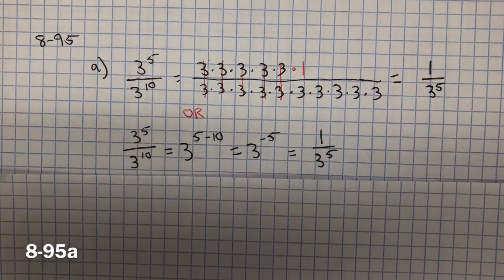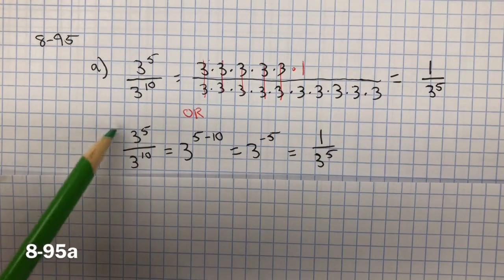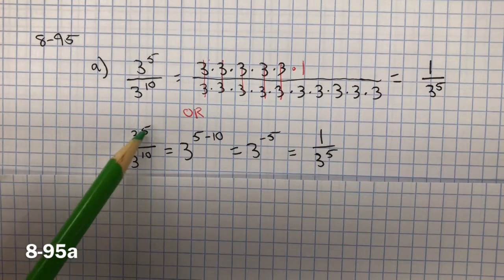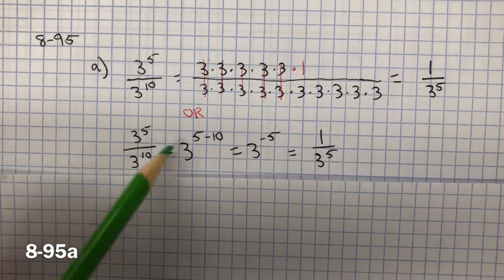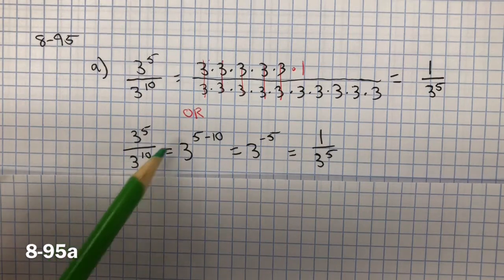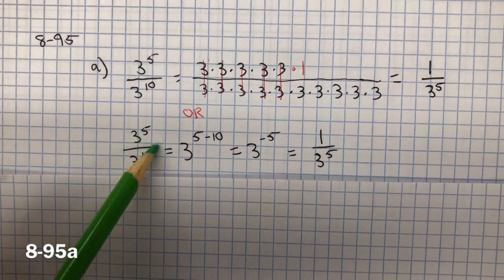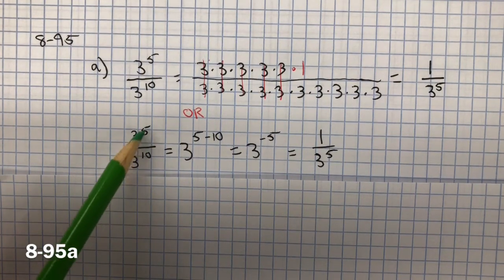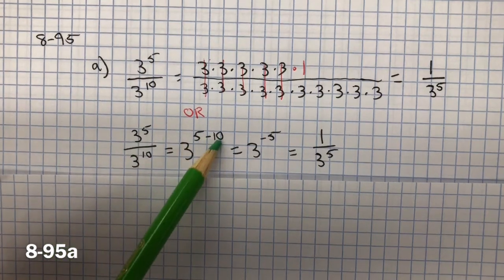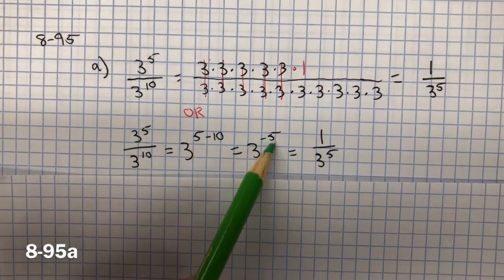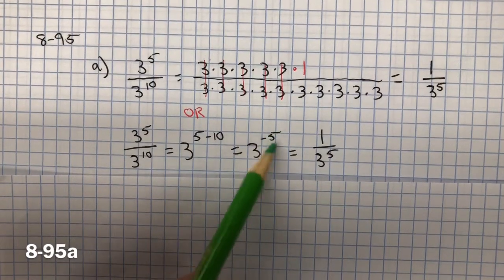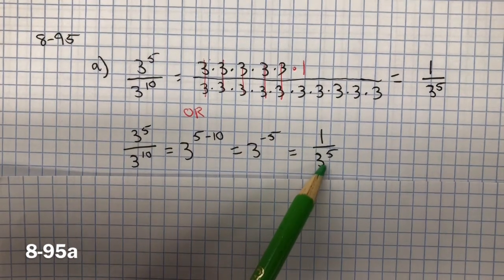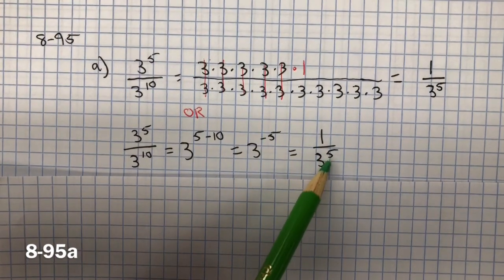Another way of solving this: when dividing integer exponents with the same base, you subtract the exponents and keep the base. The base is 3, and I treat the division bar like subtraction: 5 minus 10 is negative 5. You can't have a negative exponent, so you take the reciprocal and bring it down to the denominator, giving 1 over 3 to the fifth power.